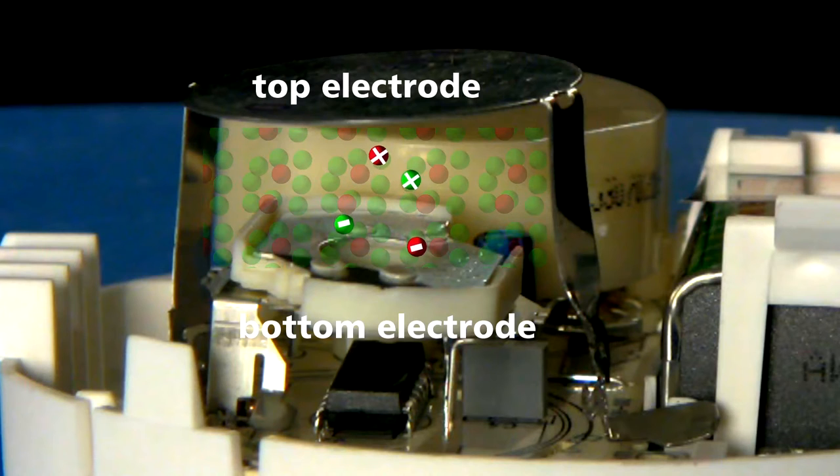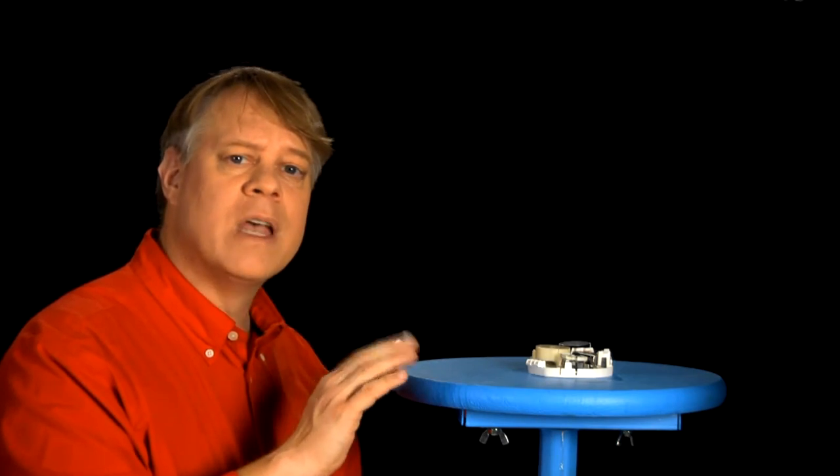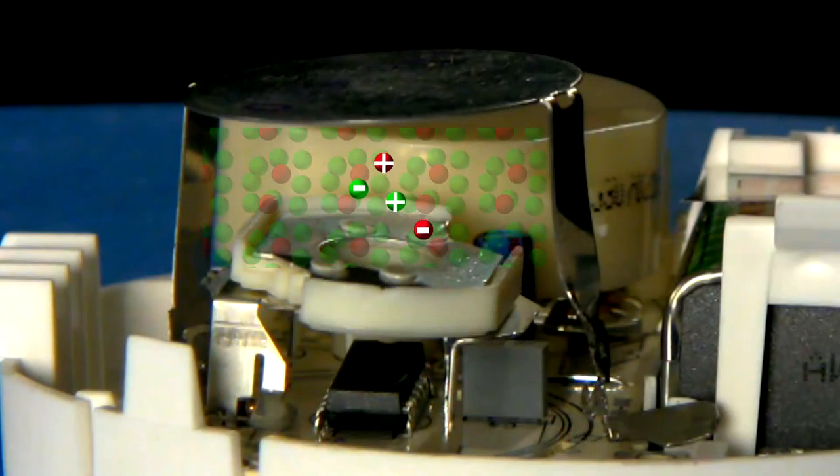The 9-volt battery causes these ions to move, thus creating a current. Now here it's tiny, something like 100 picoamps, about 100 billionth of the current flowing in your home.